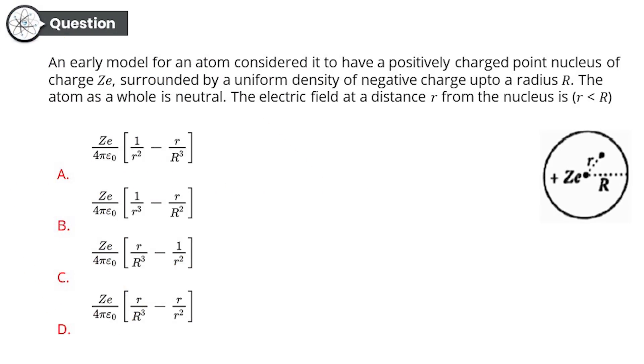I hope you understood the question. Solution of question number one. Question number two: An early model for an atom considered it to have a positively charged point nucleus of charge Z, surrounded by a uniform density of negative charge up to a radius capital R. The atom as a whole is neutral, obviously. So the electric field at a distance small r from the nucleus is, in brackets r less than capital R.